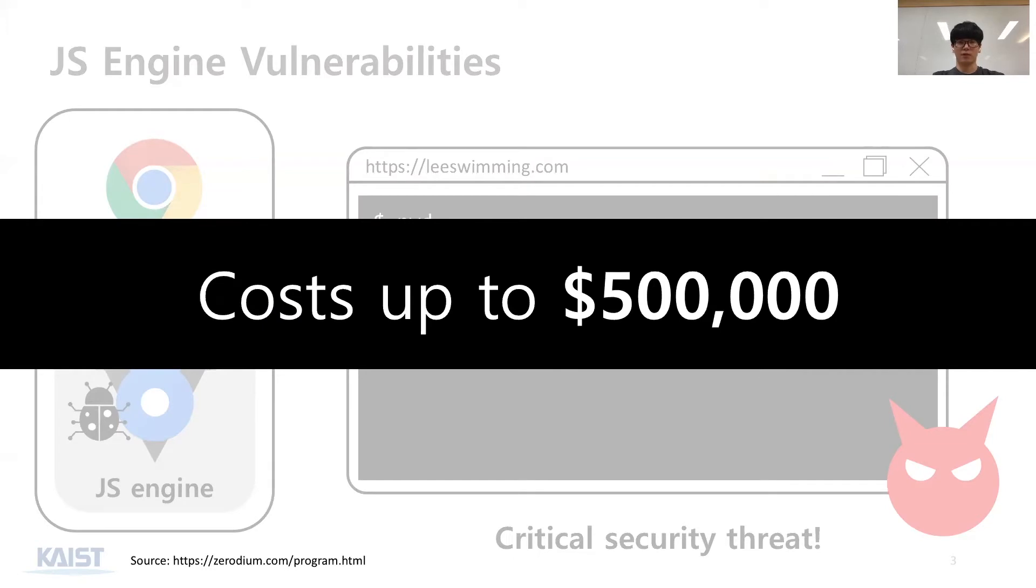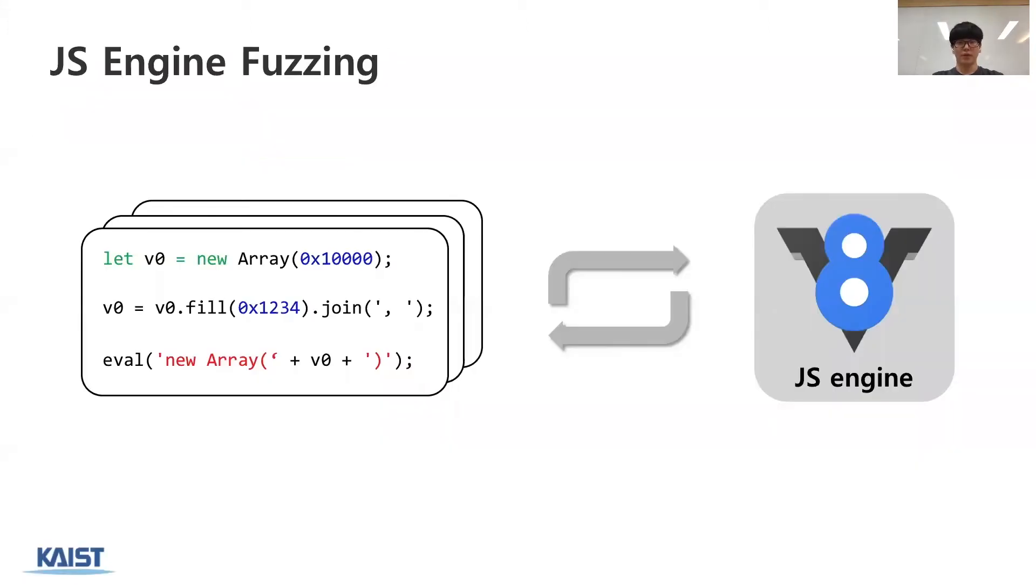Therefore, JS engine vulnerabilities pose a critical security threat. Moreover, according to ZeroZoom, when a JS engine vulnerability is chained with a local privilege escalation bug, it even costs up to US$500,000. To find such JS engine bugs, previous researchers have employed an approach called fuzzing. JS engine fuzzers repeatedly generate arbitrary JS code and test whether the generated code triggers any bug.